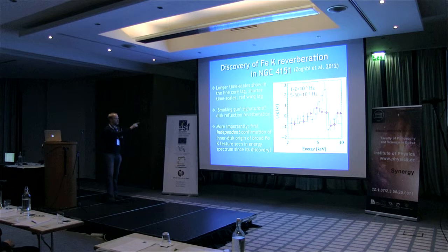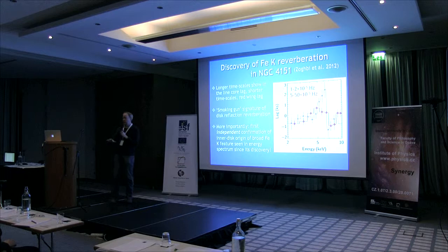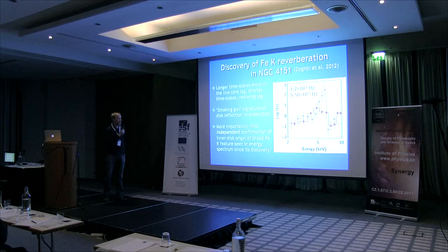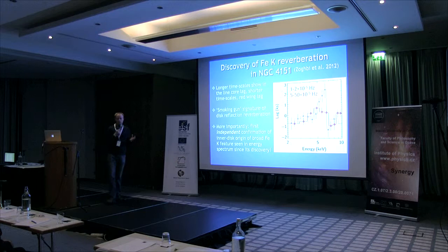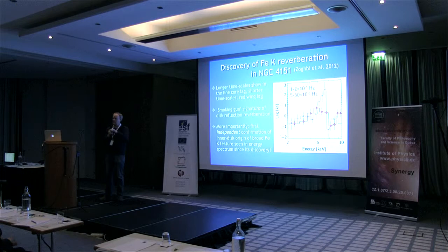The key thing about this is you see the core of the line at longer timescales, so at lower frequencies, the core of the line shows up in the lags and has larger lags - that's what you expect if it's coming from larger scales. The wings of the lines have smaller lags, so it all fits into the picture. I think this discovery of the iron lags is more important than the soft lags, although the soft lags prompted the search for the iron lags. It's the smoking gun signature of disk reflection - the independent confirmation of the inner disk origin of the iron K lines, which is the first independent evidence supporting this interpretation since the broad iron K lines were discovered.